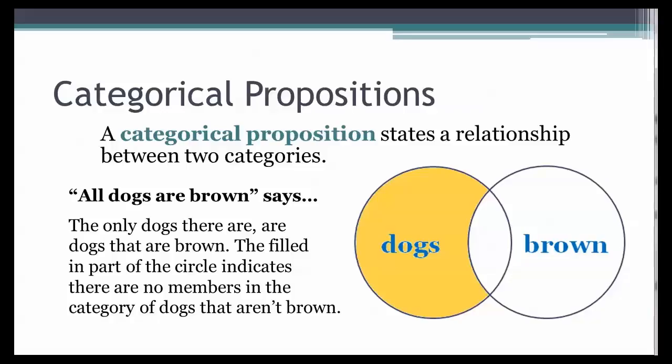We will be using a visual method of showing these relationships called Venn diagrams. In Venn diagrams, the part of the category that is empty is filled in. So in this case, the part of the circle that would indicate dogs that aren't brown is filled in. The only part of the dog category remaining represents dogs that are also brown things.